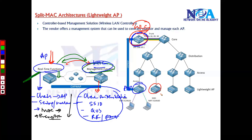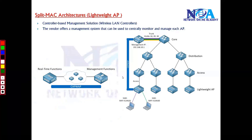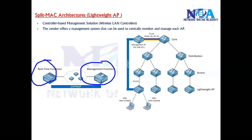Whenever the access point boots up, it contacts the WLC and gets all this configuration information. With that information it can allow clients to connect. That's why we call it split MAC architecture — we are splitting the functions of a normal wireless device into two parts: real-time functions handled by the access point, and management-related functions handled by the WLC.